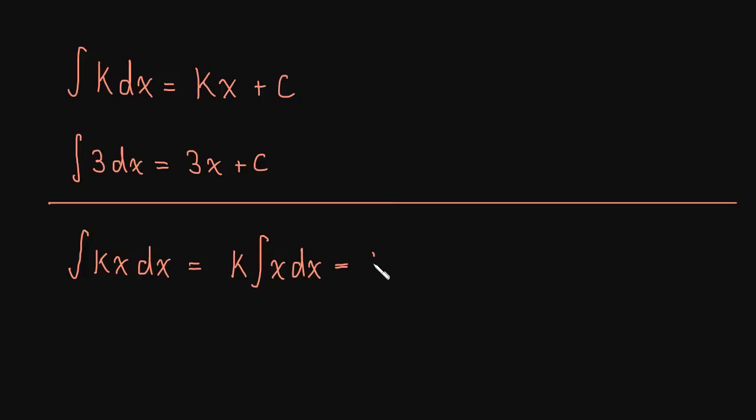And so this is going to be k times x squared over 2, so we're going to use the power rule to find that antiderivative, x squared over 2 plus c. And we can multiply inside, and we get kx squared over 2 plus c.